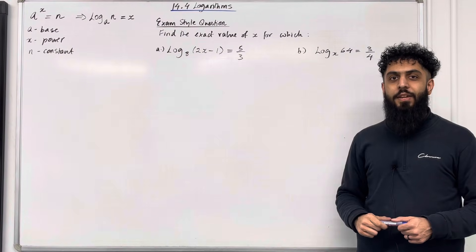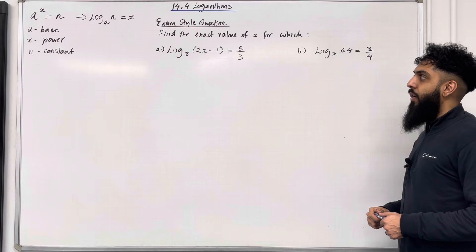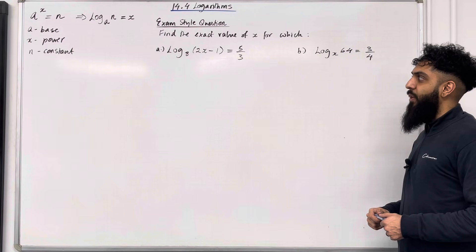Okay, so moving on to an exam style question. Find the exact value of x for which part A log base 8 of 2x minus 1 is equal to 5 over 3.